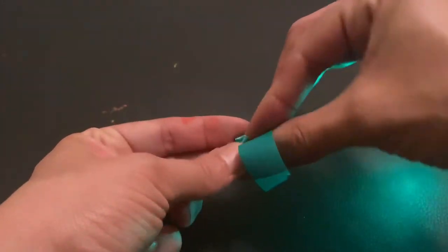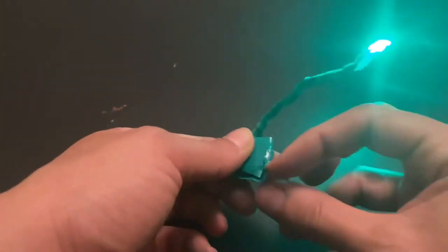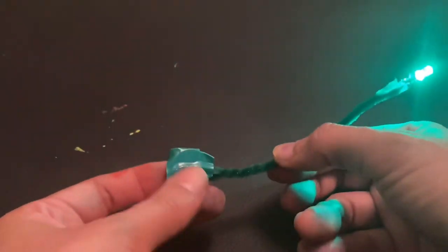The electricity from the battery is carrying up the wire through the pipe cleaners to the diodes on the LED light, giving you an electrical current and giving you light.